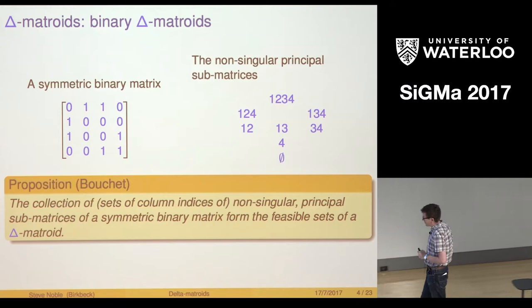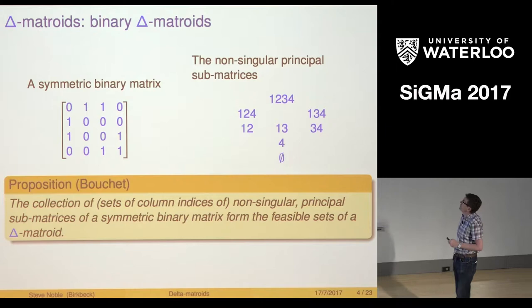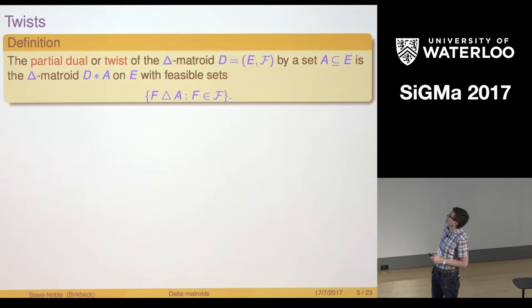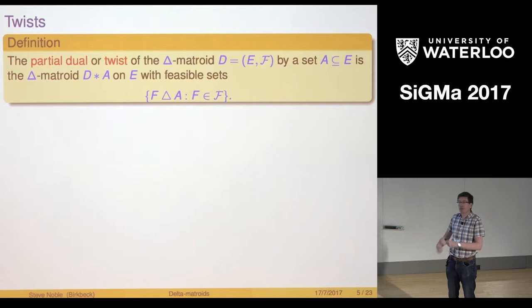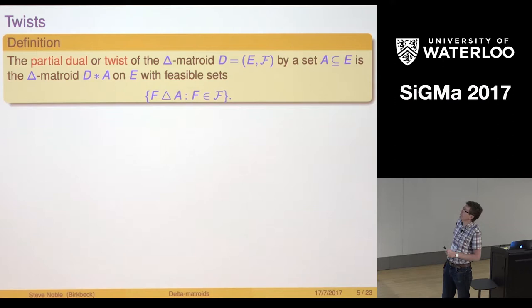Now to define binary Delta Matroids properly I need to introduce first operation that I'm going to have on Delta Matroids and that's the twist. It's a very easy idea. I take my Delta Matroid and I take a subset of the elements and I form their symmetric differences with this set A. That gives me the twist. The literature usually calls it the twist. I'm going to call it the partial dual. We'll see why that is later on.